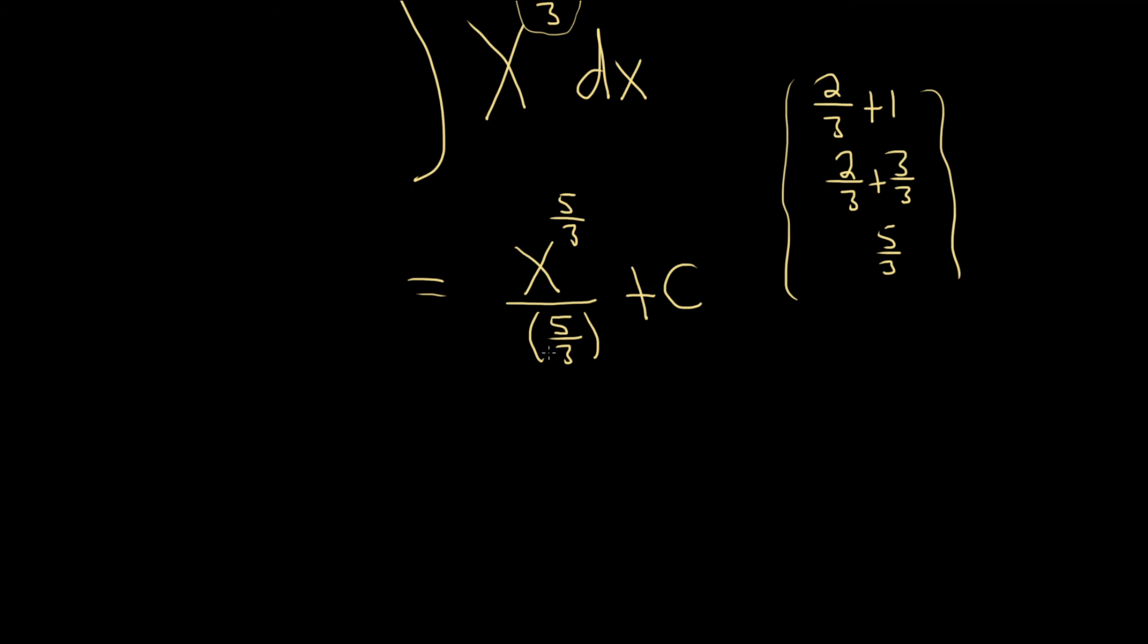You're really multiplying by the reciprocal. So you're really multiplying by 3 fifths. So this is really 3 over 5, and then times x to the 5 over 3.